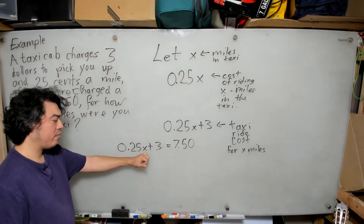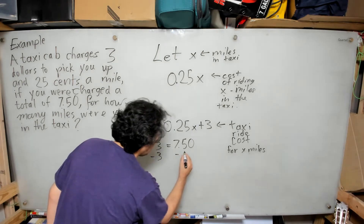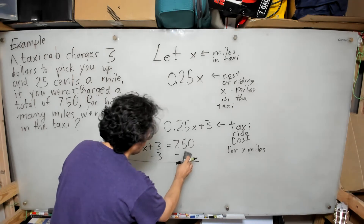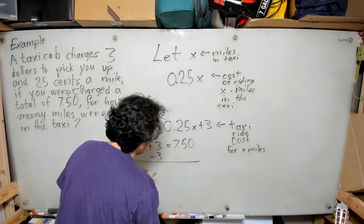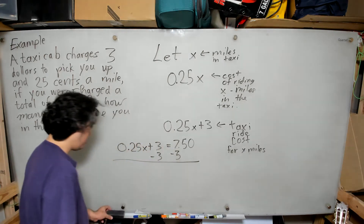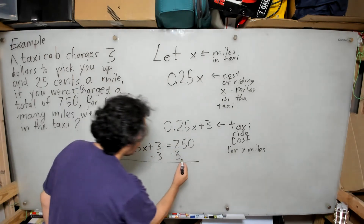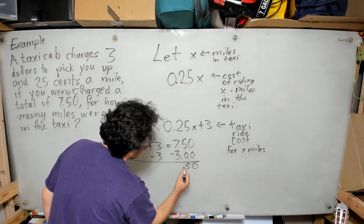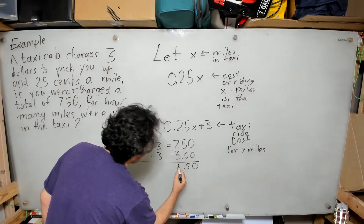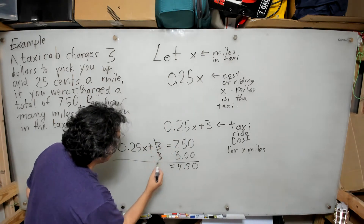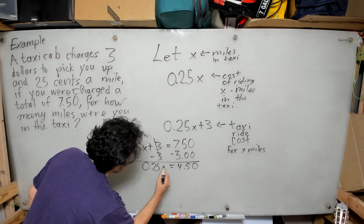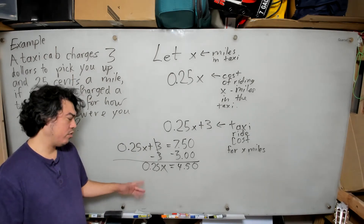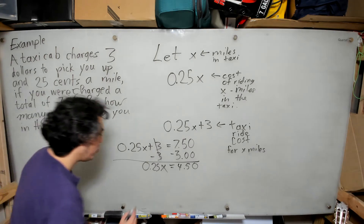To solve this equation I want to isolate x, so I subtract 3 from both sides. After doing the subtraction — 7.50 minus 3.00 — the 3 on the left goes away and I'm left with 0.25x = 4.50. From here I'm going to divide both sides by 0.25.